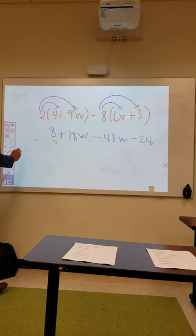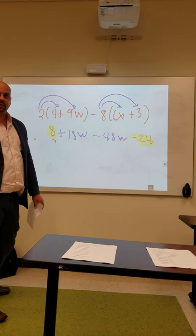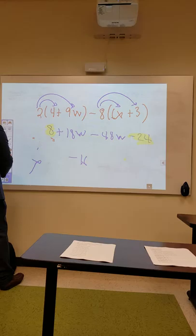Now we're going to combine the like terms. The only things that are alike are the numbers, 8 and negative 24. We learned earlier in class, if the signs are different, take the sign of the higher number and subtract. Which is higher? 24, and it's negative. So 24 minus 8 is negative 16.